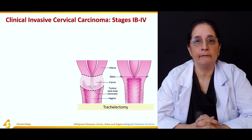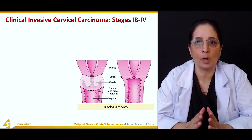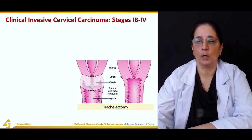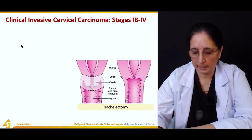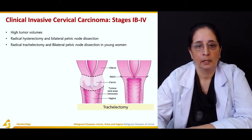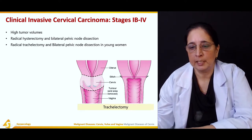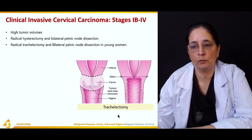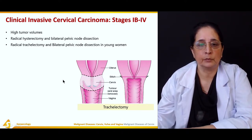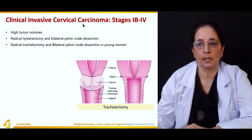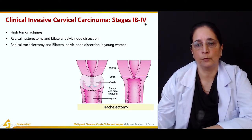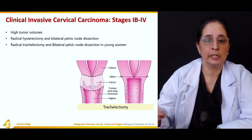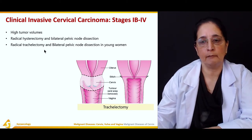The treatment of clinical invasive cervical carcinoma, which is usually stage 1b to stage 4, depends on trachelectomy. Trachelectomy is the surgical removal of the cervix. Clinical invasive cervical carcinoma at stage 1b to stage 4 usually has high tumor volumes. Usually radical hysterectomy and bilateral pelvic node dissection are performed.